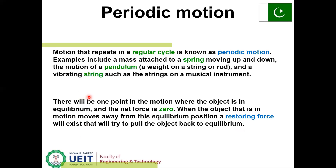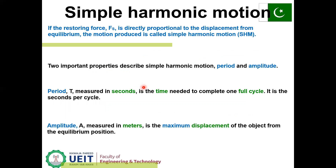There will be one point in the motion where the object is in equilibrium and the net force is zero. When the object moves away from this equilibrium position, a restoring force acts to pull the object back to equilibrium. The motion produced is called simple harmonic motion if the restoring force Fs is directly proportional to the displacement from the equilibrium position.